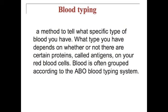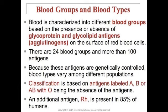Blood typing is a method to determine what specific type of blood you have. What type you have depends on whether certain proteins called antigens are present on your red blood cells. Blood is often grouped according to the ABO blood typing system. Blood is characterized into different groups based on the presence or absence of glycoprotein and glycolipid antigens on the red blood cells. There are 24 blood groups and more than 100 antigens. Classification is based on antigens labeled A, B, AB, or O.